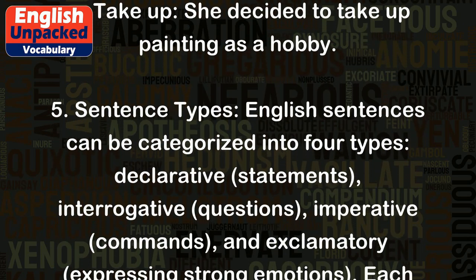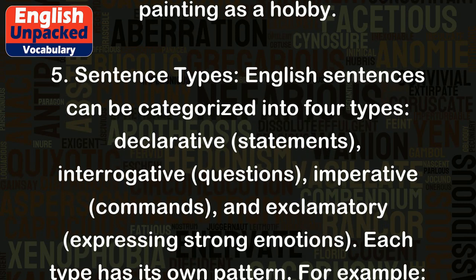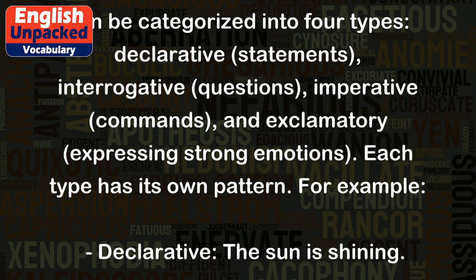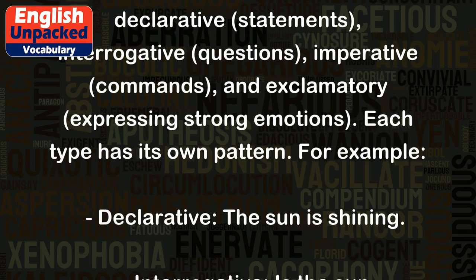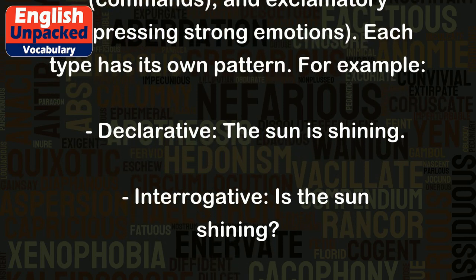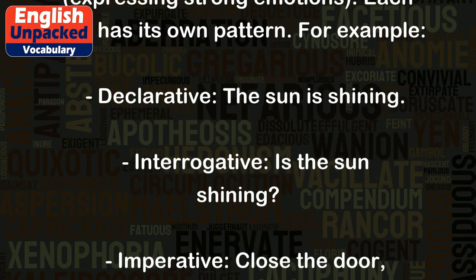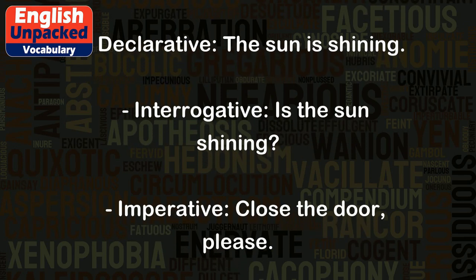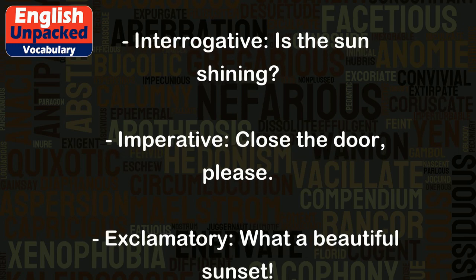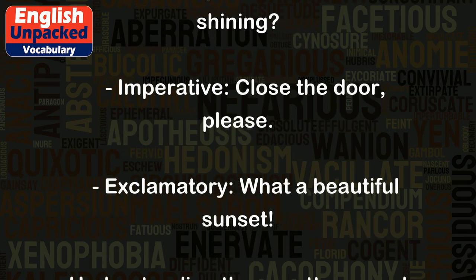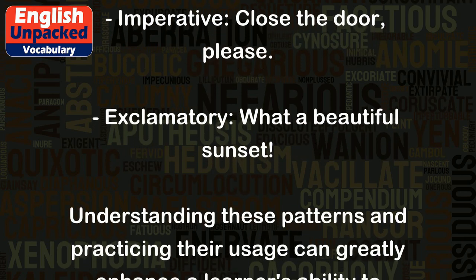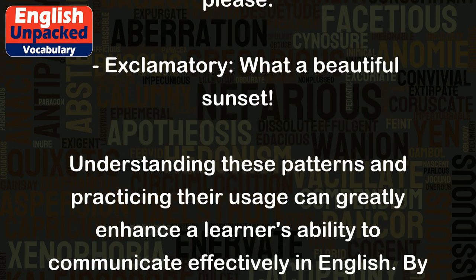5. Sentence Types. English sentences can be categorized into four types: declarative (statements), interrogative (questions), imperative (commands), and exclamatory (expressing strong emotions). Each type has its own pattern. For example: declarative — the sun is shining. Interrogative — is the sun shining? Imperative — close the door, please. Exclamatory — what a beautiful sunset!